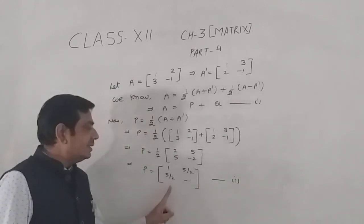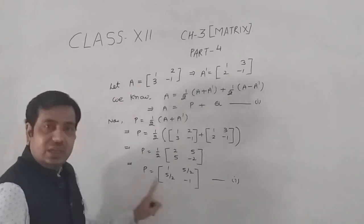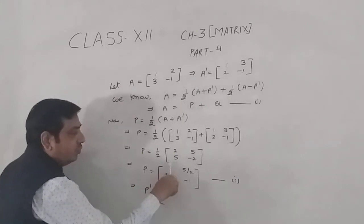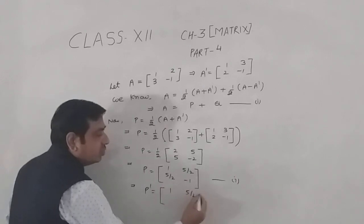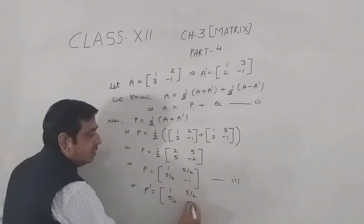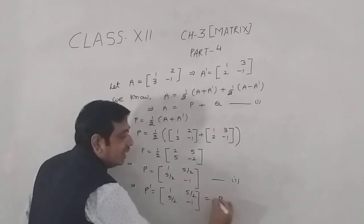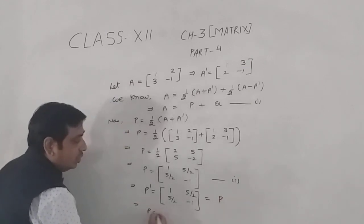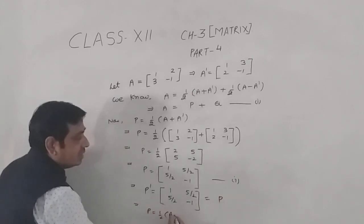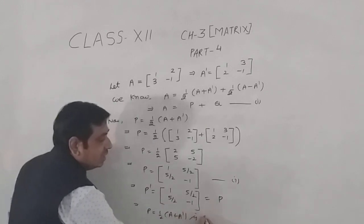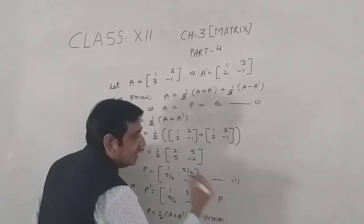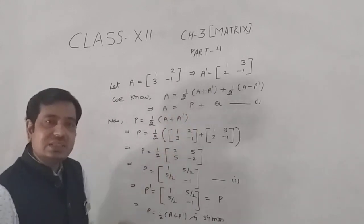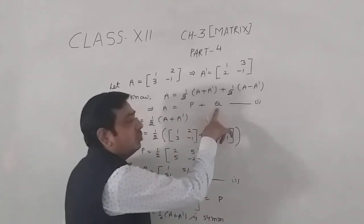Now check whether P is symmetric. If you take the transpose of P, the first column becomes the first row and the second column becomes the second row — you get P again. So P equals half(A plus A') is indeed a symmetric matrix.